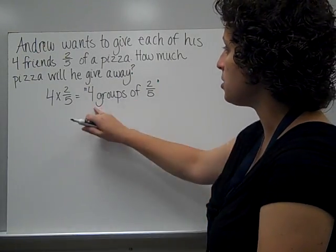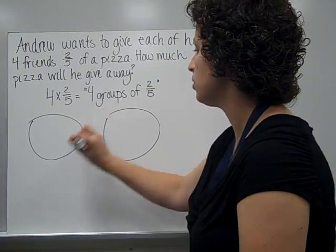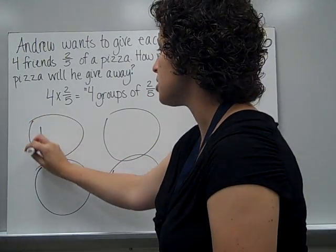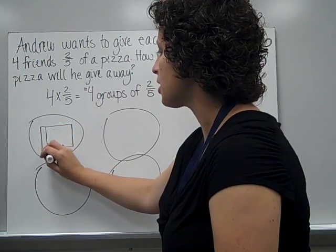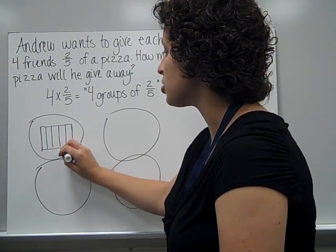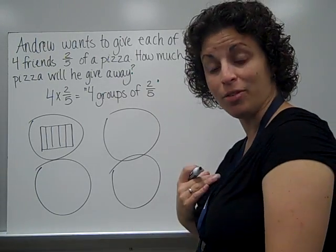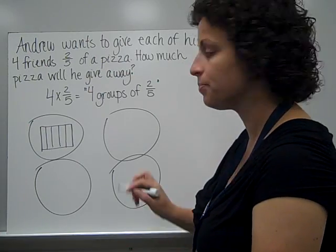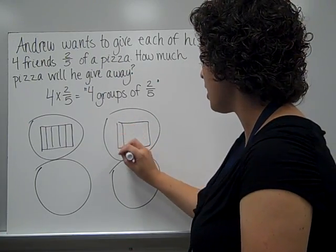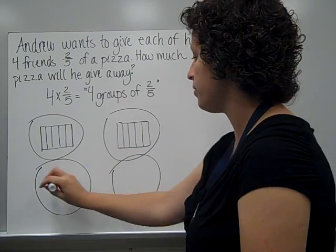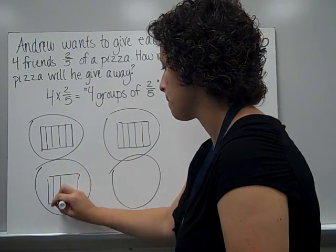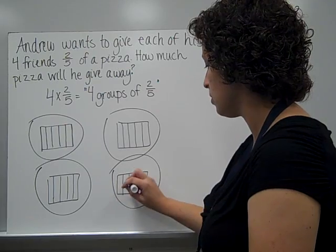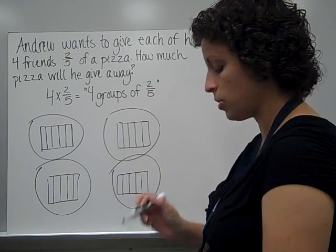So I'm going to draw my model. This time I need 4 groups: 1, 2, 3, 4. And inside I need to show 2 fifths. I'm going to use a square rectangle, and this time I need to cut it into fifths. Now, fractions are supposed to be equal size pieces; however, you and I aren't perfect and our parts won't be perfect — we're just going to do the best we can. Okay, so now I have 4 groups and I've cut the model into fifths.